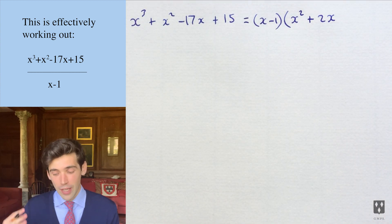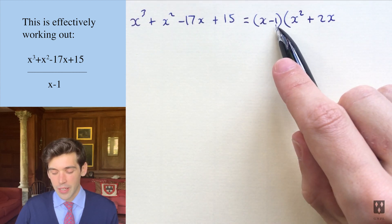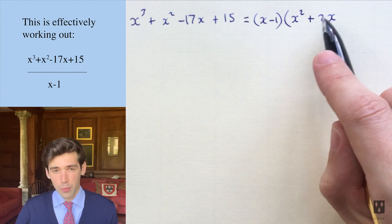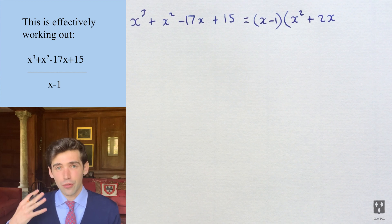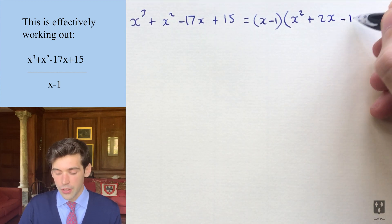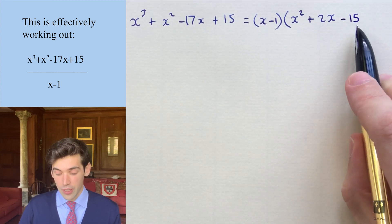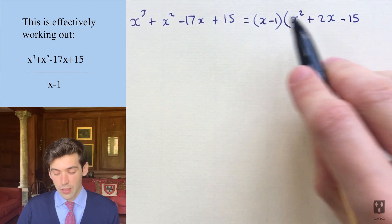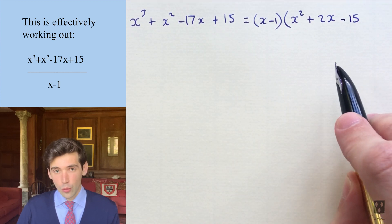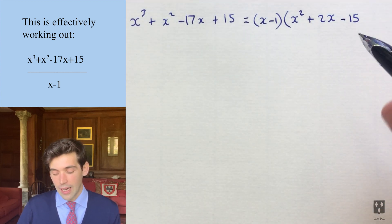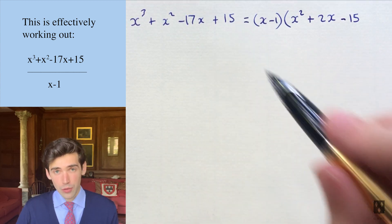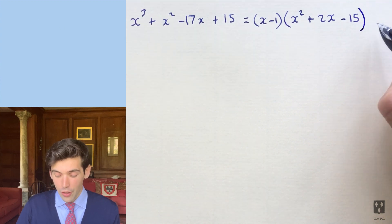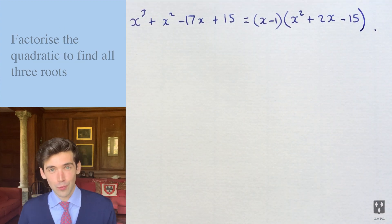And then you do this again. So you say, but now this 2x is giving us minus 2x from this part of the bracket, but we want minus 17x. So minus 2 to minus 17, that's minus 15. So we do minus 15, and just 15 because 15 times the x gives us the next one, then that gives us the minus 17x. And now it happens that minus 15 times minus 1 gives us plus 15. So that is factorized. Quite quick.